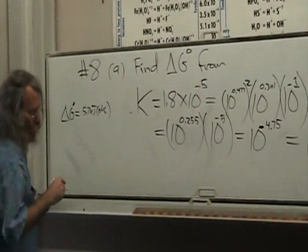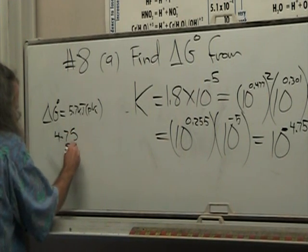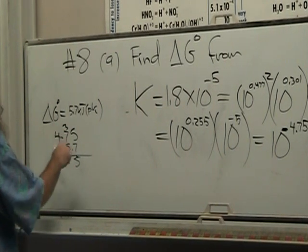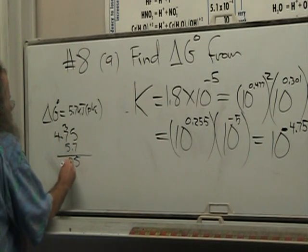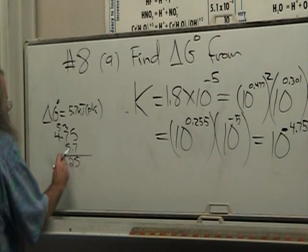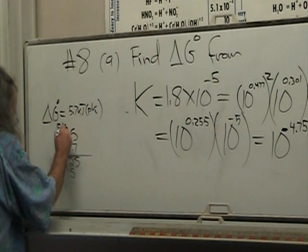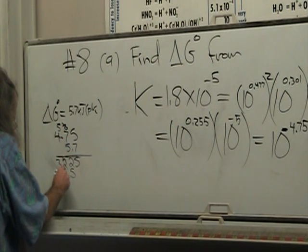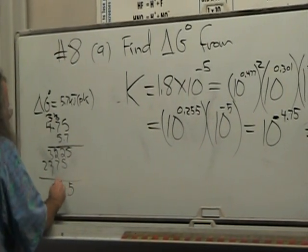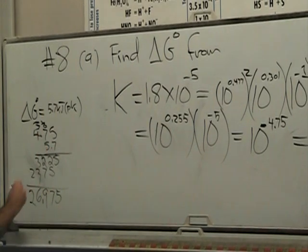And so I have 4.75 times 5.7. 5 times 7 is 35. 7 times 7 is 49, so 52. 4 times 7 is 28, and 5 is 32. And then the whole business times 5 is 25. 7 times 5 is 35, and 2 is 37. 4 times 5 is 23. And it's 5, 7, 9, 3, 6.